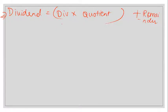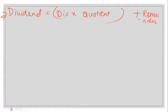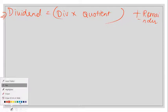This form — dividend equals divisor times quotient plus remainder — is tied to the later part of this chapter. This is very important, as this is what we will be using while dividing a polynomial with another polynomial.